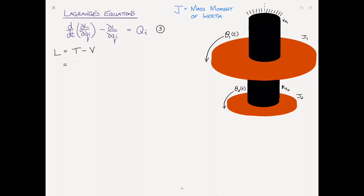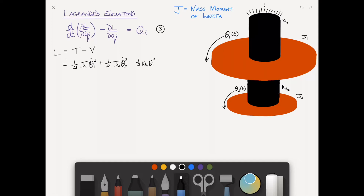We can write the Lagrangian as the kinetic energy of the first disk — one half J1 theta1-dot squared — plus the kinetic energy of the second disk — one half J2 theta2-dot squared — minus the energy stored in the upper spring — one half KT1 times theta1 squared — minus one half KT2 times the twist in the lower spring, which is (theta 2 minus theta 1) quantity squared. We'll call this equation 4.